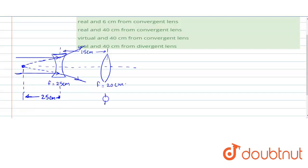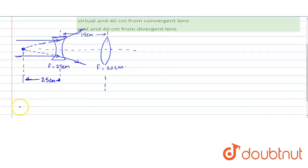Now what about this? This will act as an object for lens two, right? So the distance of this object from lens two will be 25 plus 15, which is 40 cm. Now this is acting as a real object for this converging lens. So let's find where the image will be formed.